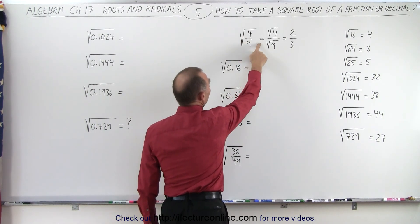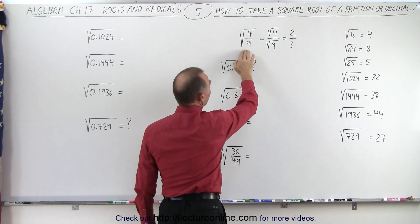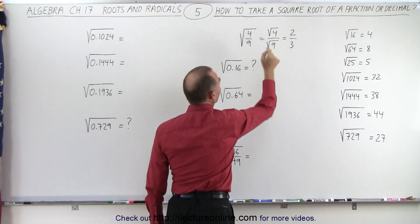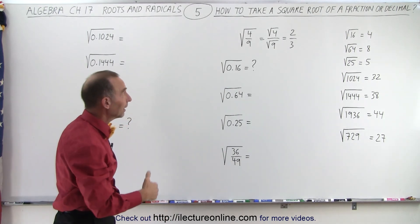Well, we can actually separate those square roots for the numerator and the denominator separately. So this can be written as the square root of 4 divided by the square root of 9. And of course, we know what the square root of 4 and 9 are. It's 2 and 3.